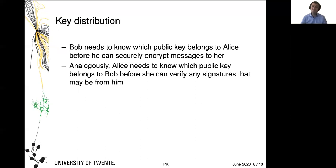Unfortunately, not everything is done with public key cryptography. Since public keys are public knowledge and can be freely distributed, nothing prevents an adversary — let's call her Eve — from claiming that a certain key is Alice's public key. Bob needs a way to find out which public key really belongs to Alice, otherwise he might accidentally encrypt using Eve's public key. Similarly, Alice needs to know which public key belongs to Bob, otherwise she cannot verify signatures that may be from him. This is the key distribution problem that we're going to tackle with public key infrastructures.